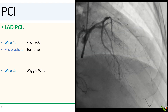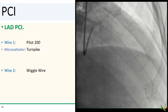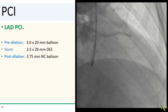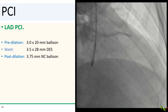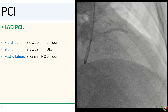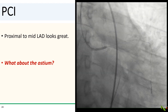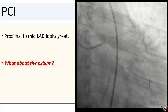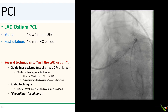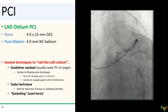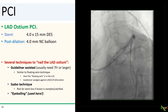We went ahead and gently wired the LAD with a Pilot 200 wire using a Turnpike microcatheter and exchanged the wire to a wiggle wire for better support. We then dilated the LAD with a 3.0 balloon, stented with a 3.5 by 28 mm DES, and post-dilated with a 3.75 balloon. After LAD PCI, the proximal to mid-LAD looks great, but we decided to fix the ostium as well — stenting with a 4.0 by 15 mm DES and post-dilating with a 4.0 NC balloon.